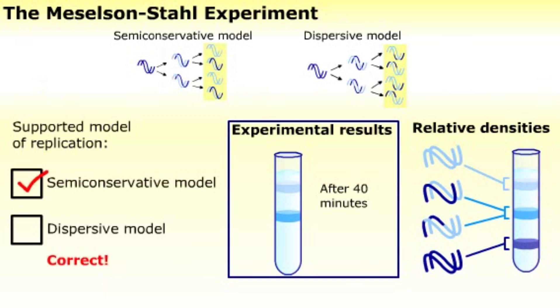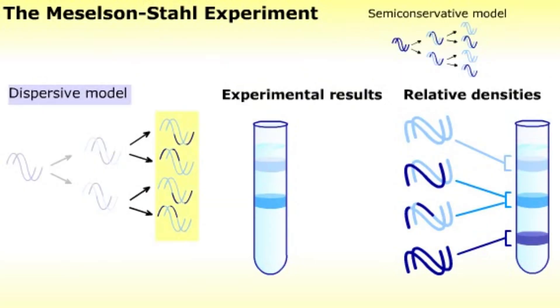That's correct! The dispersive model predicts that each DNA strand will be a mixture of heavy and light, and that all of the DNA molecules will have roughly the same density.